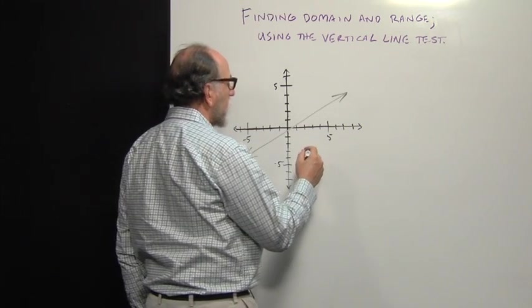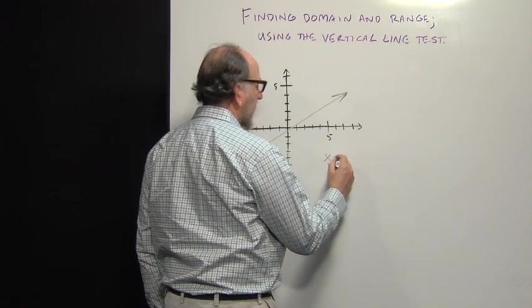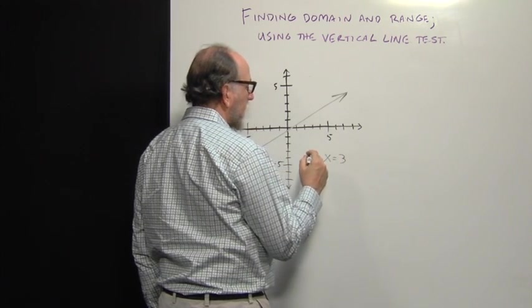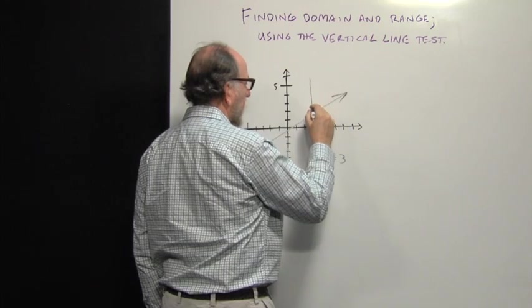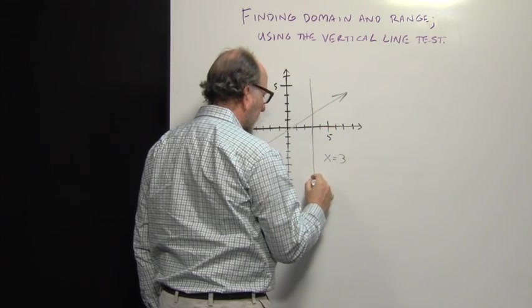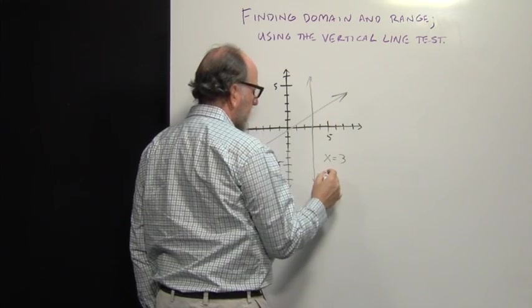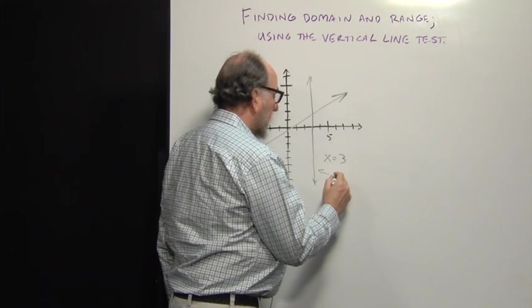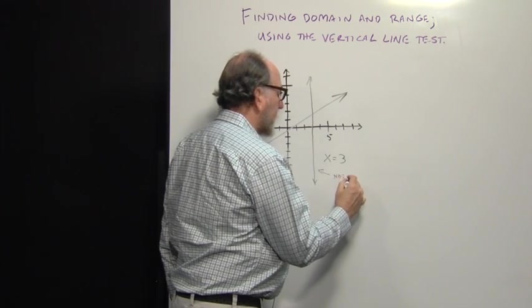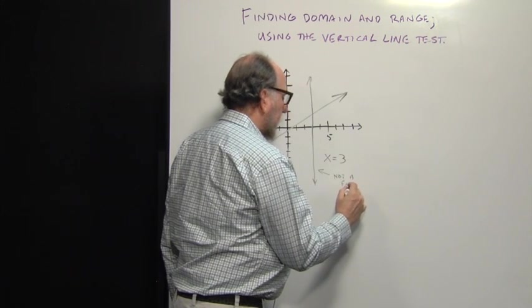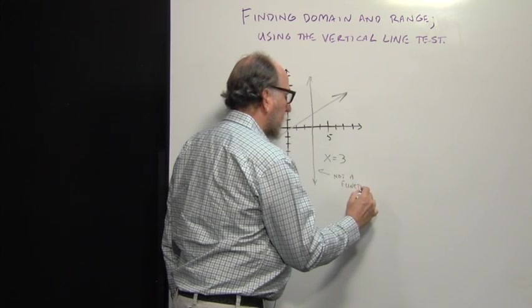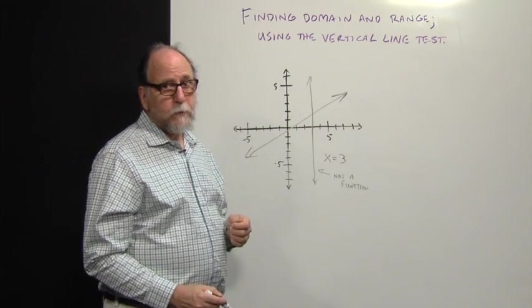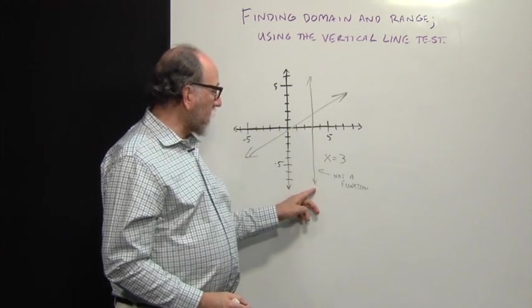And that's the one that has the equation x equals some number, like x equals three. That would be this line here. It is not a function, and that's the only linear graph that's not a function, because it is itself a vertical line, so any vertical line drawn along it would touch it at every point.